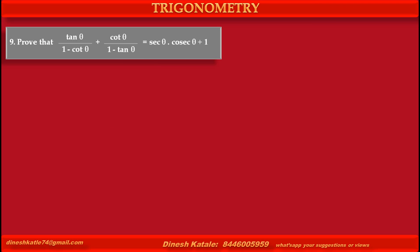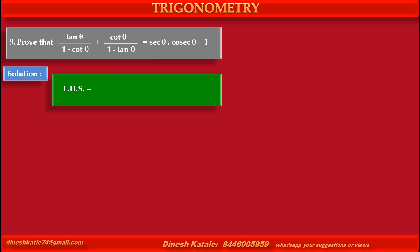Problem 9: Prove that tan θ upon (1 minus cot θ) plus cot θ upon (1 minus tan θ) is equal to sec θ into cosec θ plus 1. Solution: Left hand side is equal to tan θ upon 1 minus cot θ plus cot θ upon 1 minus tan θ.